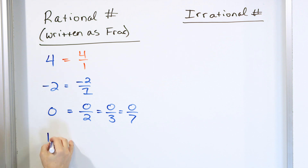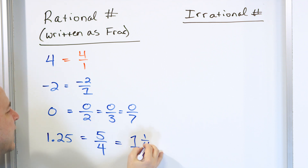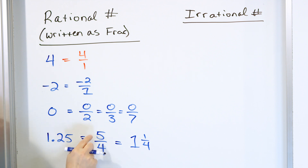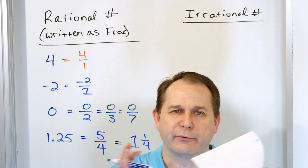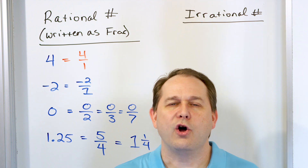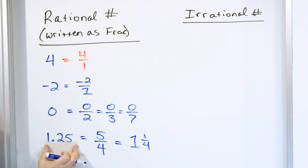What about the number 1.25? It looks like maybe this is not a rational number, but it actually is. Because the number 1.25 can be written as five-fourths. Five-fourths as a mixed number goes in one time with a remainder of one over four — so one and a fourth. It turns out that any of the decimals that you know, the decimals you get in a calculator, they're almost always going to be rational. Either the decimals are going to stop, like 1.25 — it stops — and these can always be written as a fraction. So they're all rational.